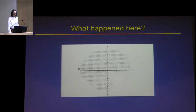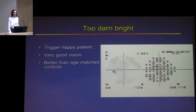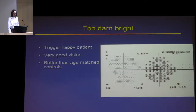What happened here? The answer is trigger-happy — this patient has very, very good vision or they're just pressing the button willy-nilly. Unfortunately the machine can tell. Look at that: high fixation losses — they're looking around. It's just not a very reliable result; false negatives are essentially zero. They're just really going to town.